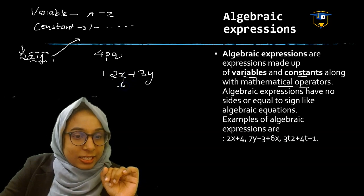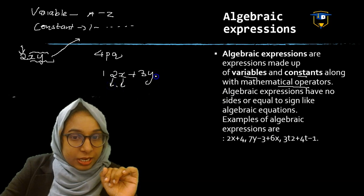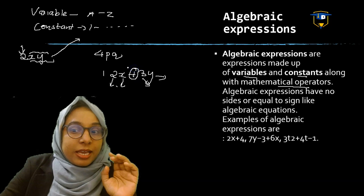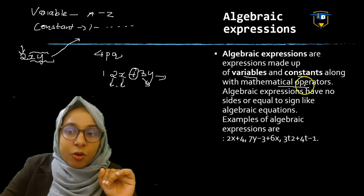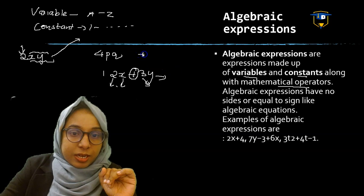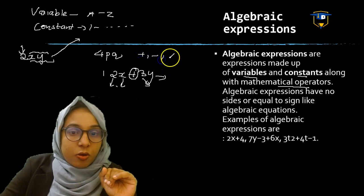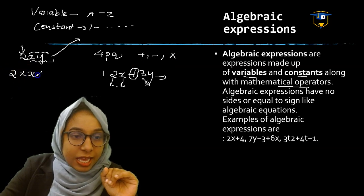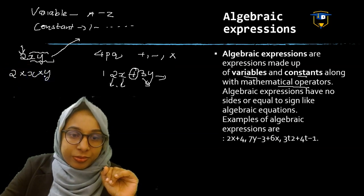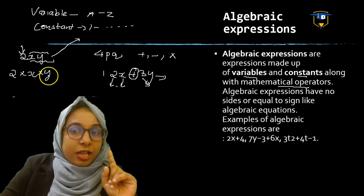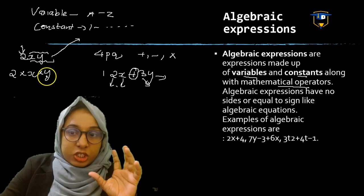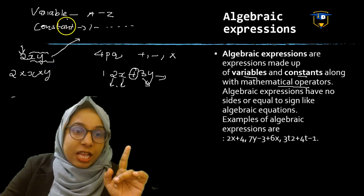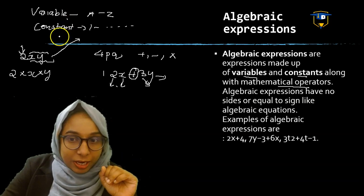In 2x plus 3y: x is a variable, 2 is a constant, y is a variable, 3 is a constant, and they are connected by a mathematical operator. Mathematical operators mean plus, minus, or multiplication. For example, 2xy means 2 into x into y. So Algebra Expressions are expressions made up of variables and constants with mathematical operators.